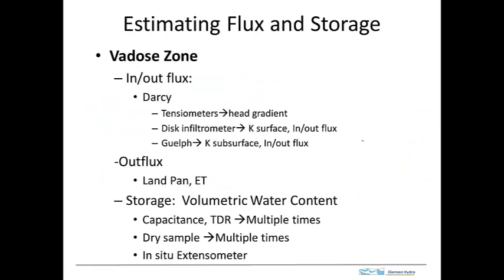So I've got them summarized here. Here's the vadose zone, and to do the flux in and out, we'll use tensiometers to measure the hydraulic head gradient. And we've got a disk infiltrometer and a Guelph permeameter. Both of those will give us the hydraulic conductivity. The disk infiltrometer does it at a surface. The Guelph permeameter is the hydraulic conductivity in the subsurface. So we can put this information together to get fluxes within the vadose zone.